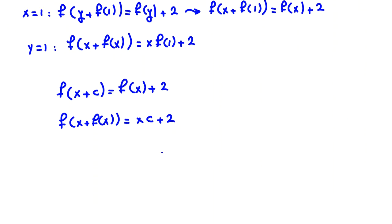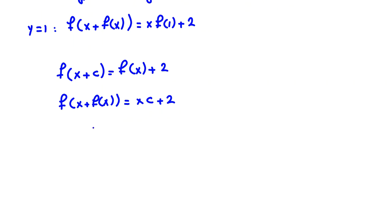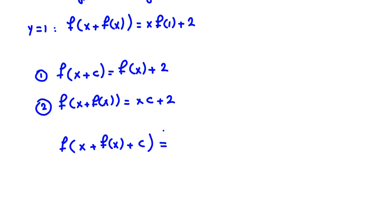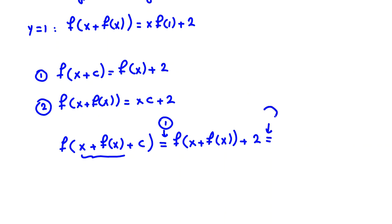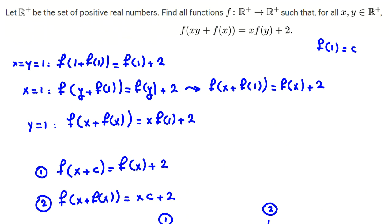Now I want to write an equation combining these two. Consider f(f(x) + C). Using the first equation, something plus C equals f of that thing plus 2. So f(f(x)) + f(f(x)) — using the second equation — gives x·C + 2 + 2 = x·C + 4. So we found f(f(x)) = x·C + 4.